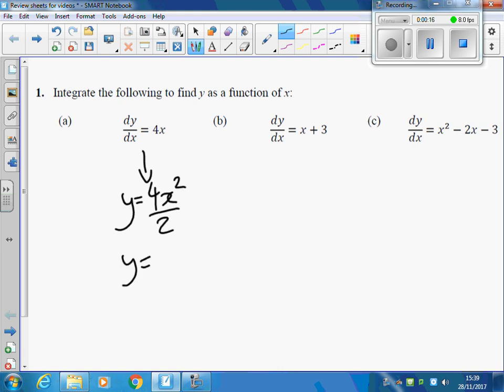So I'll do 4 divided by 2 here to get 2. Here the power goes up by 1 and we divide by the new power, and even with the 3 the power goes up by 1 so we have an x there. Don't worry if people have written that as a half x squared plus 3x, because of course dividing by 2 and times it by a half are the same thing.